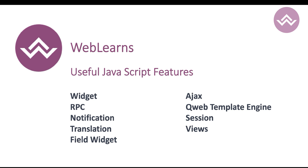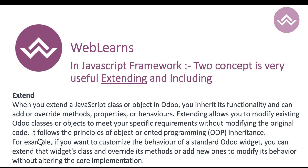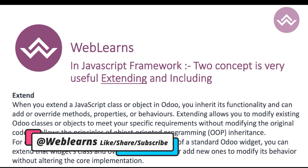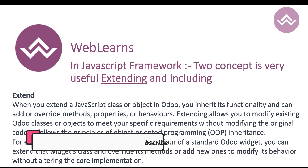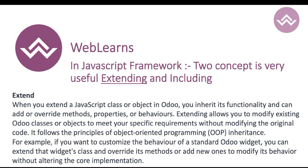There are many useful features available in the JavaScript framework: Widget, Ajax, RPC, QWeb template engine, Notification, Session, Translation, Views, Fields, and many more. These are some of the main features supported by the JavaScript framework in Odoo.